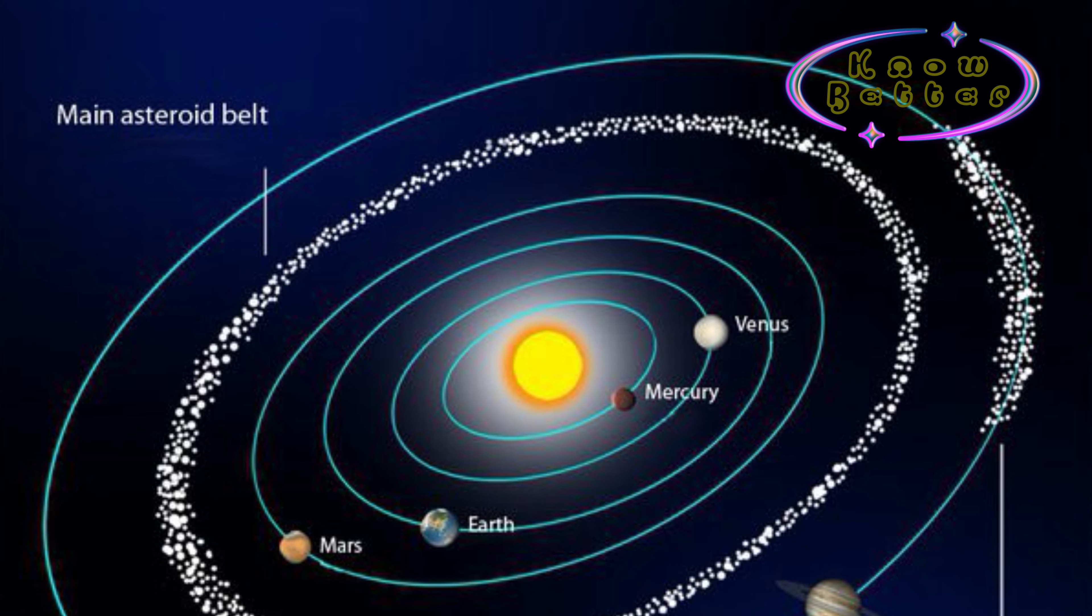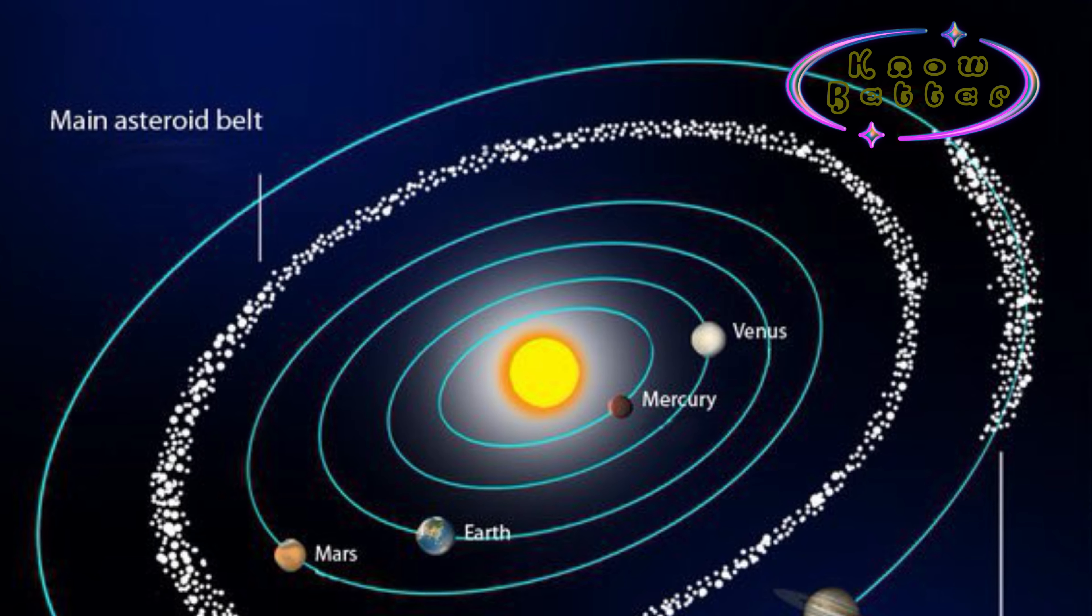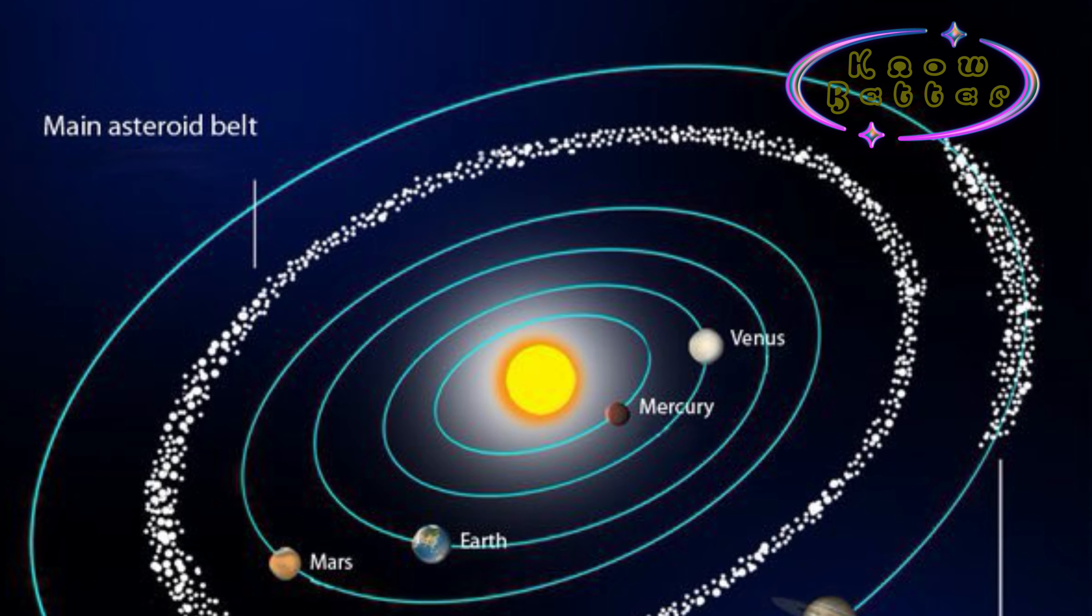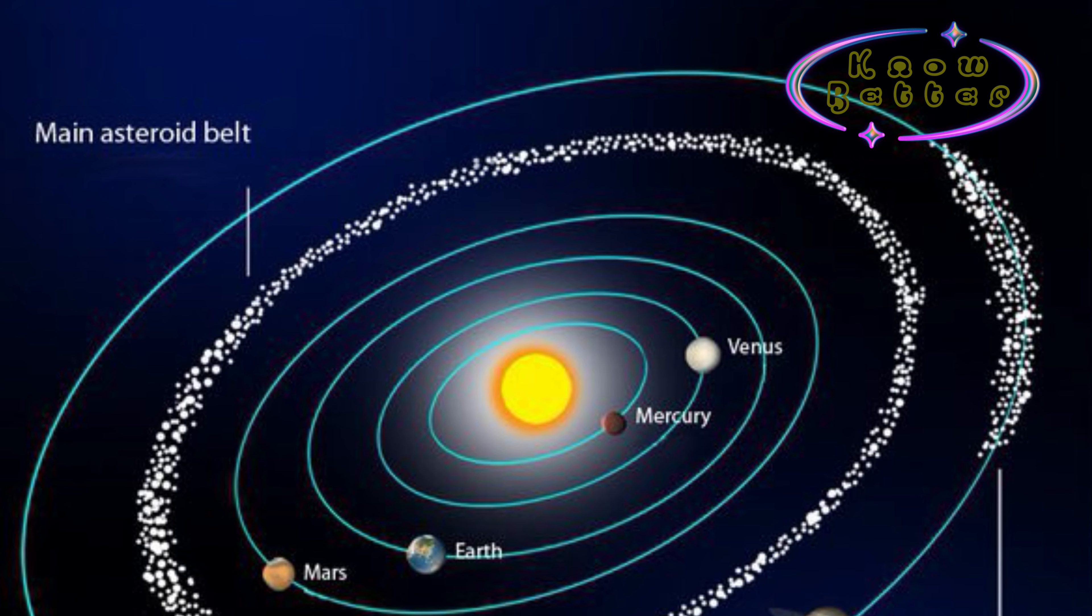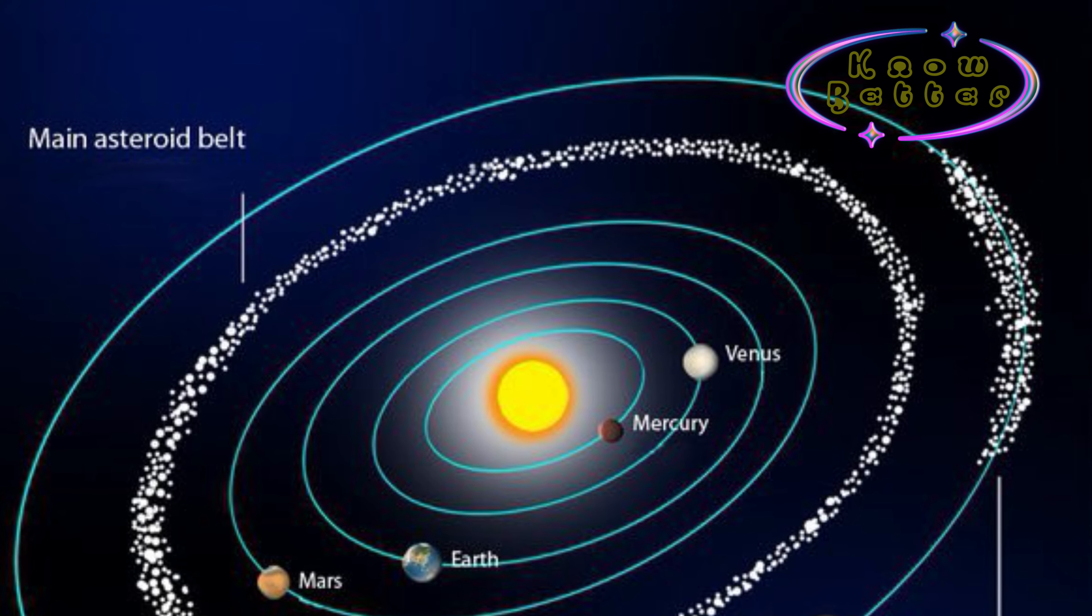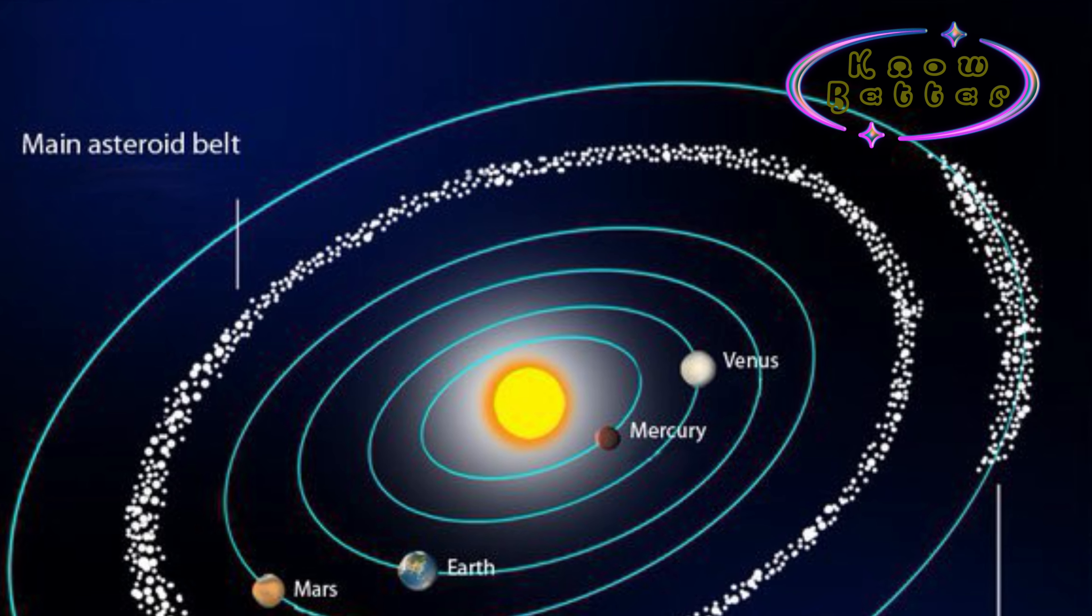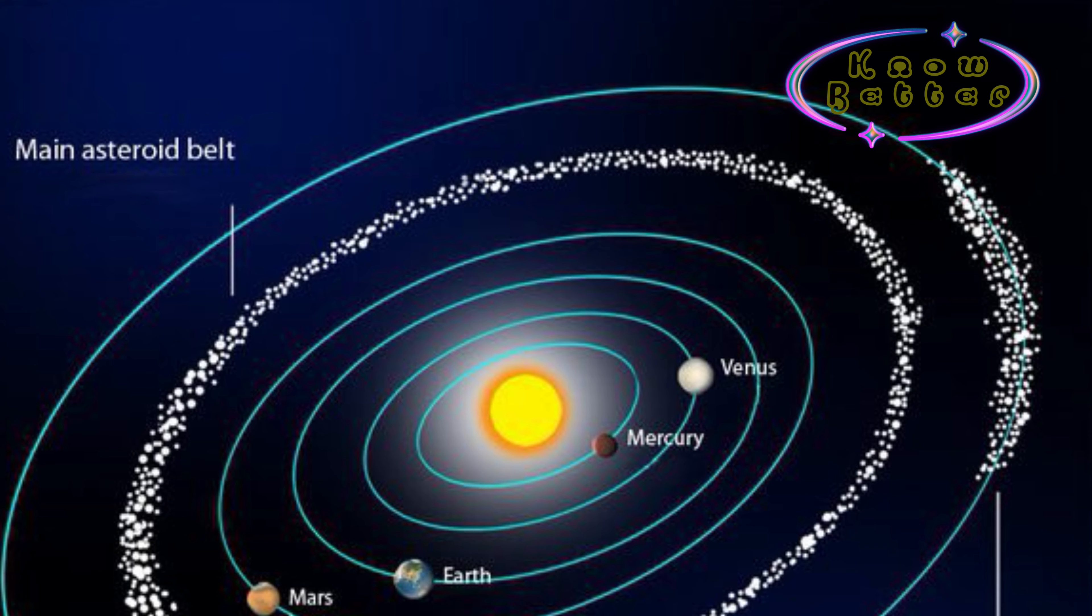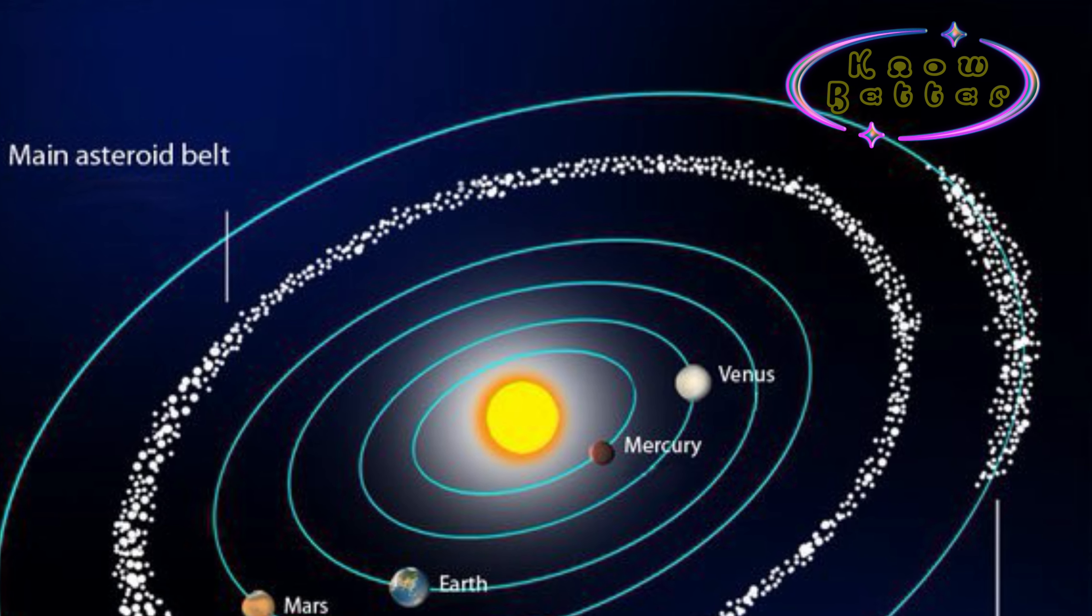The first group is called the inner planets and the second one is the outer planets. The inner planets are also called the terrestrial planets or the rocky planets. These are Mercury, Venus, Earth, and Mars. These planets are nearest to the Sun compared to the other planets. And then there is an asteroid belt, a cloud of asteroids, millions of asteroids. And then there are outer planets which is beyond this belt.